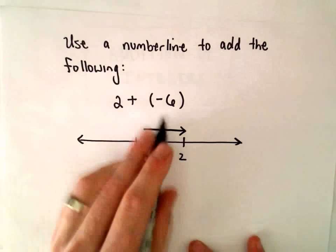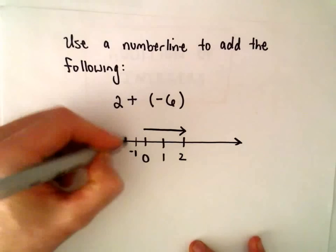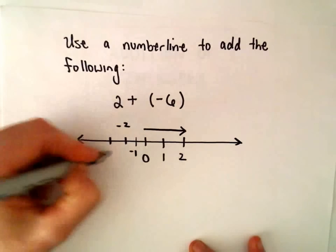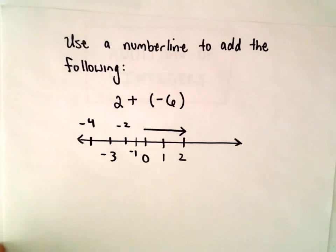Now I know that we have to go to the left because we're adding a negative number, so let me put a negative 1, negative 2, negative 3, negative 4, let me squeeze those numbers in there.